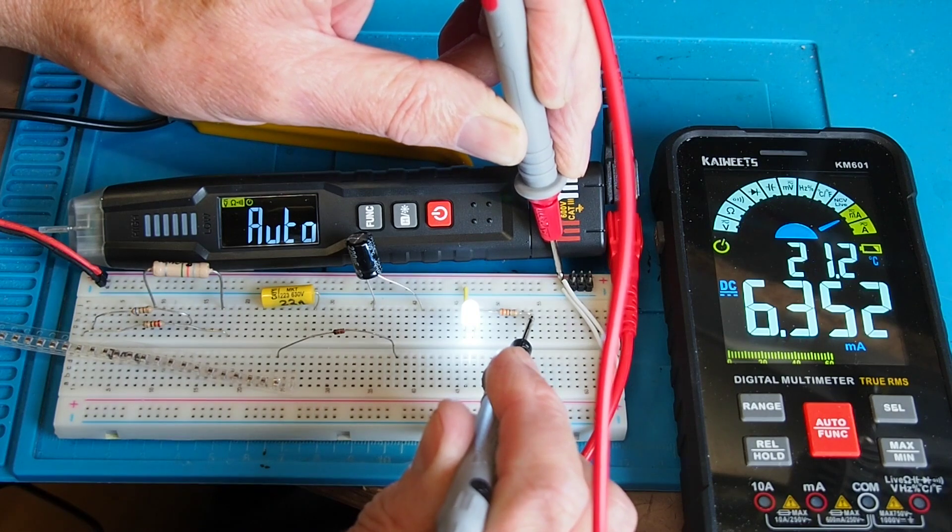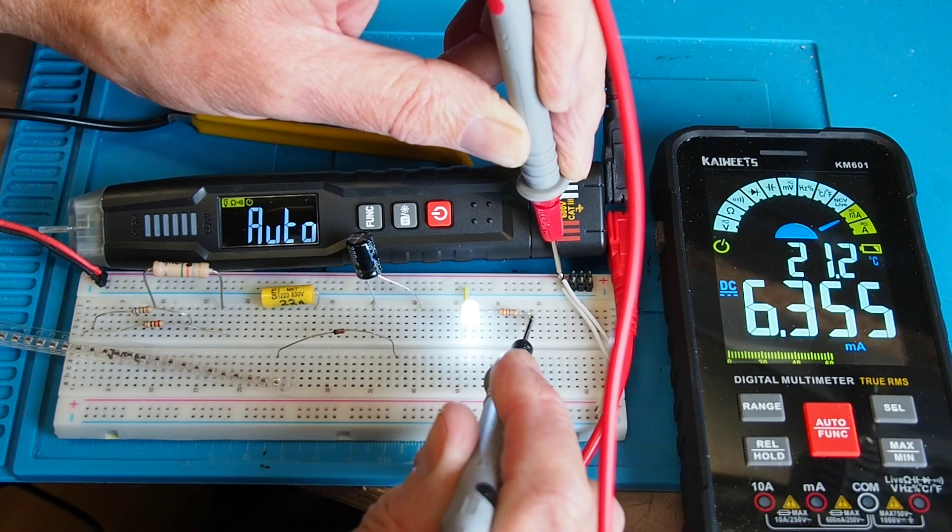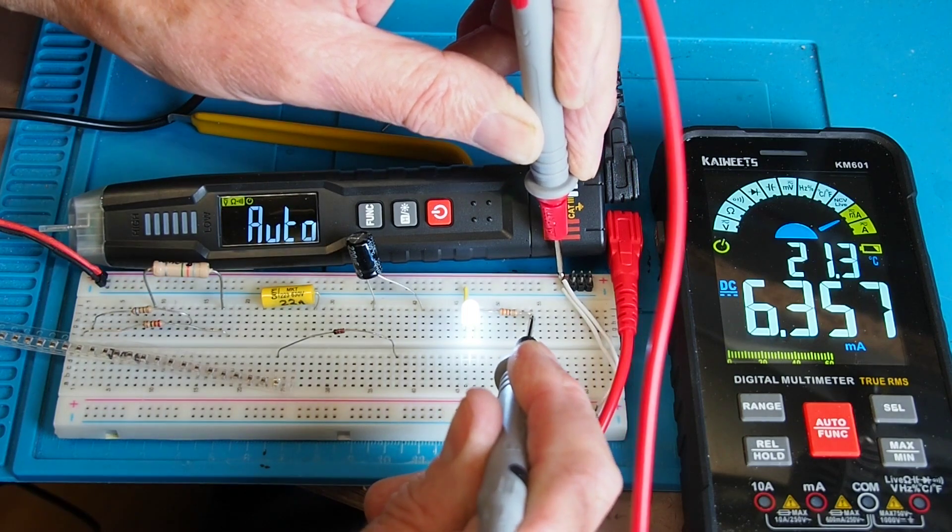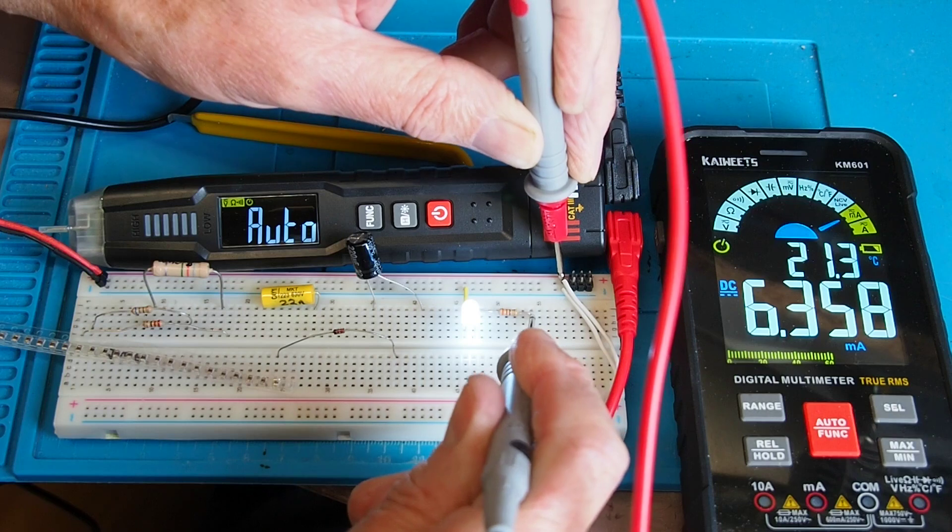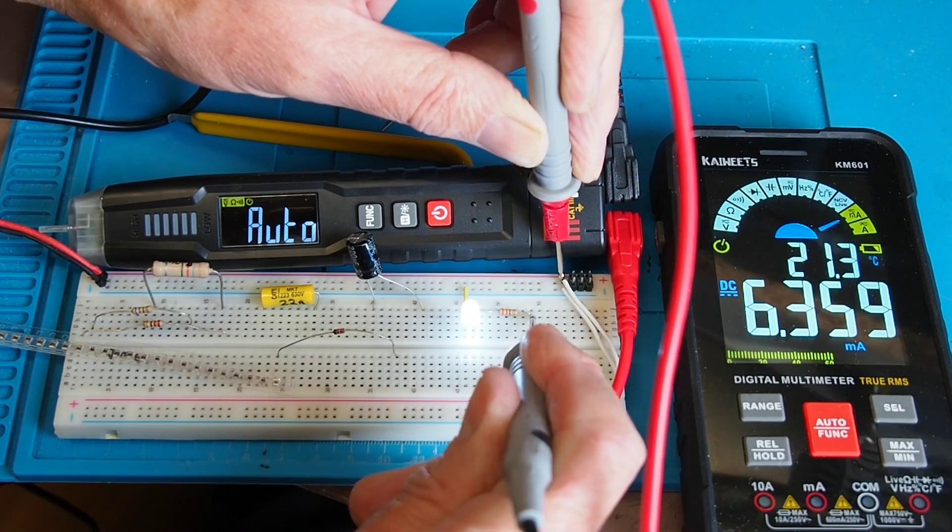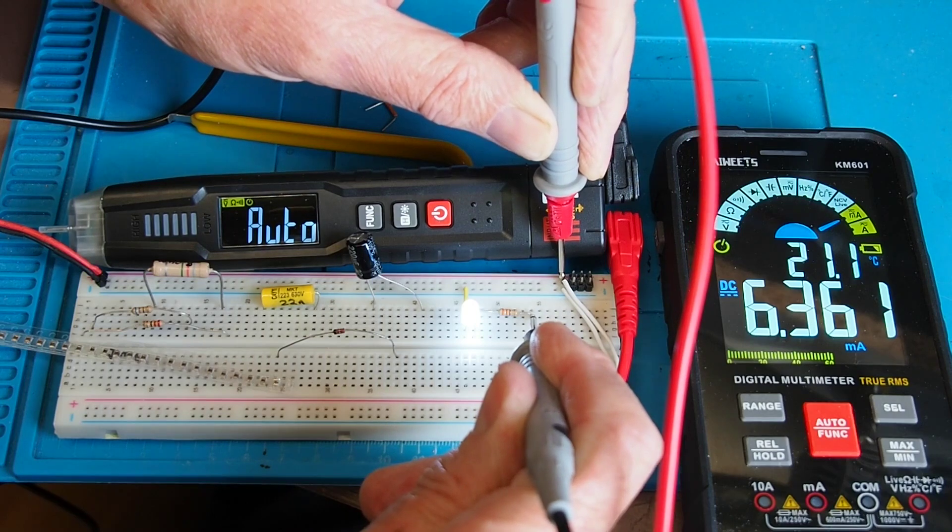6.35 milliamps and my calculated value is about 6.4 milliamps. So being 100 microamps out I don't think is too bad and it's a nice little test to check the voltage and the resistance readings.